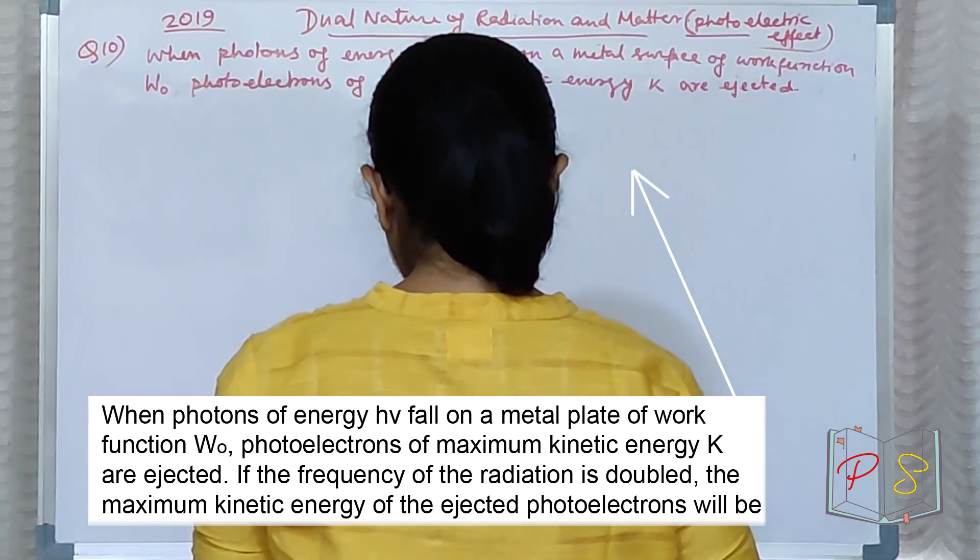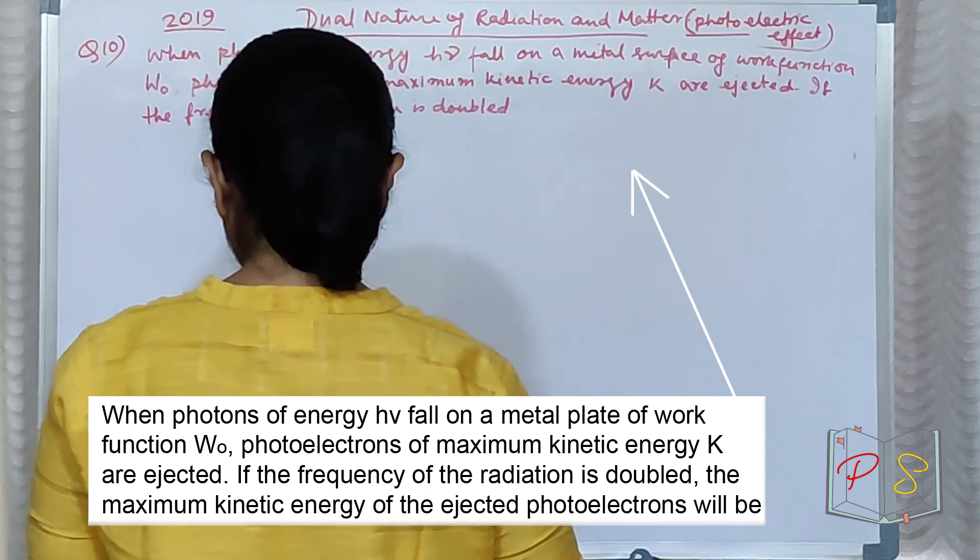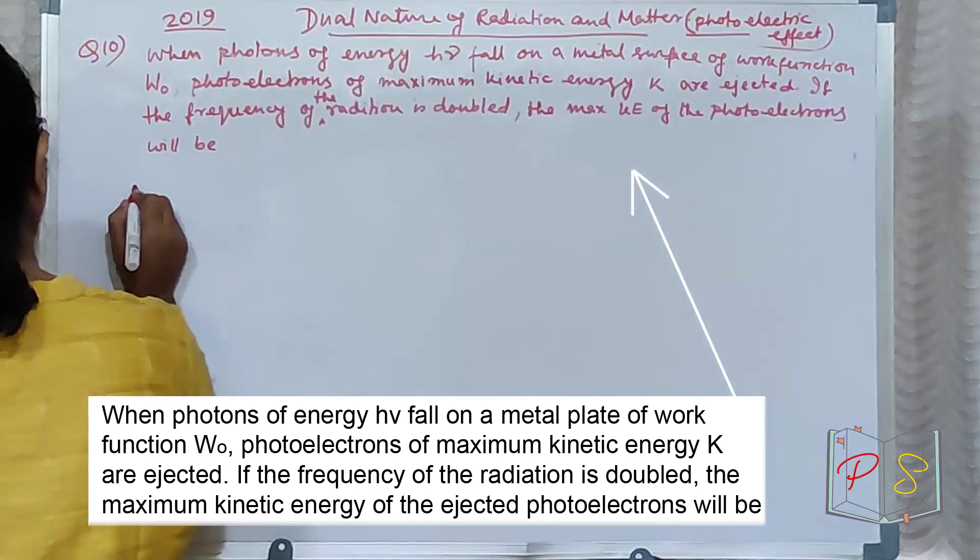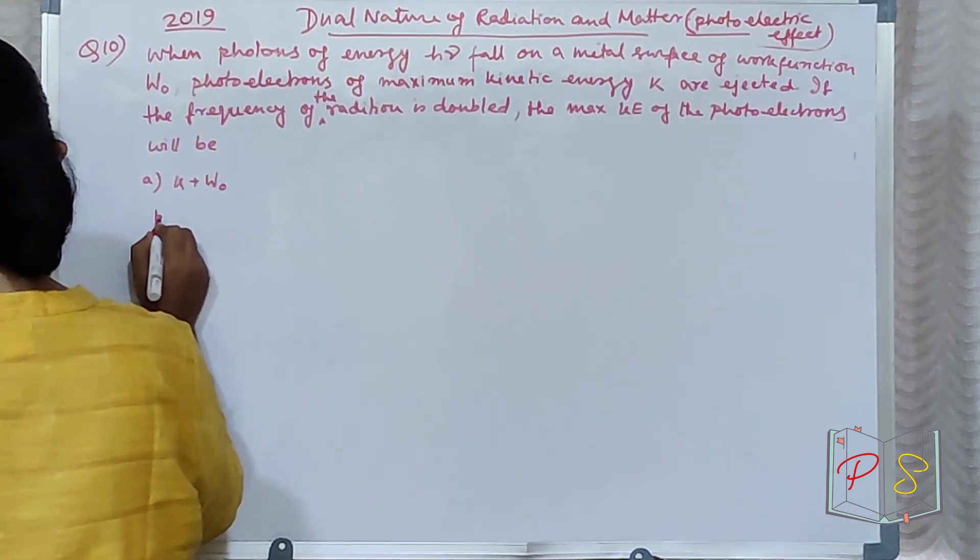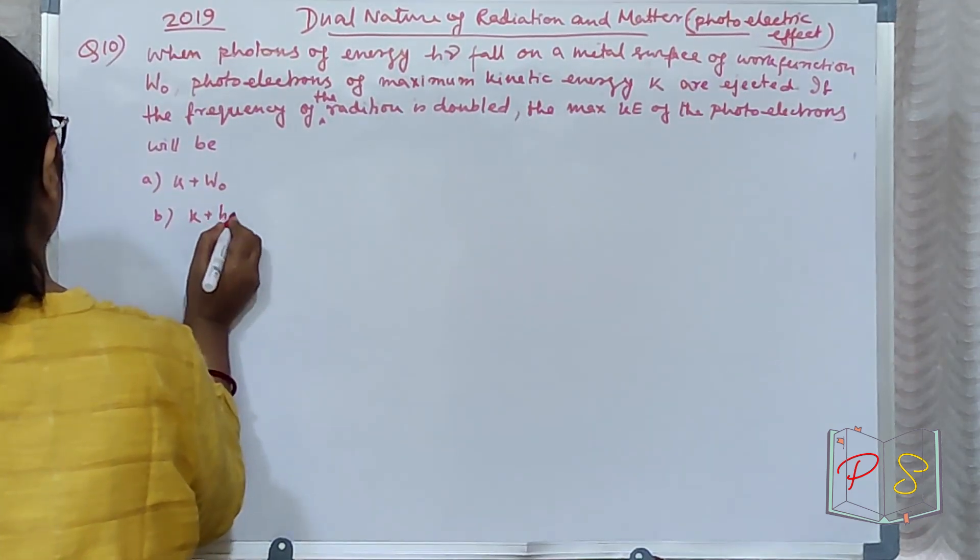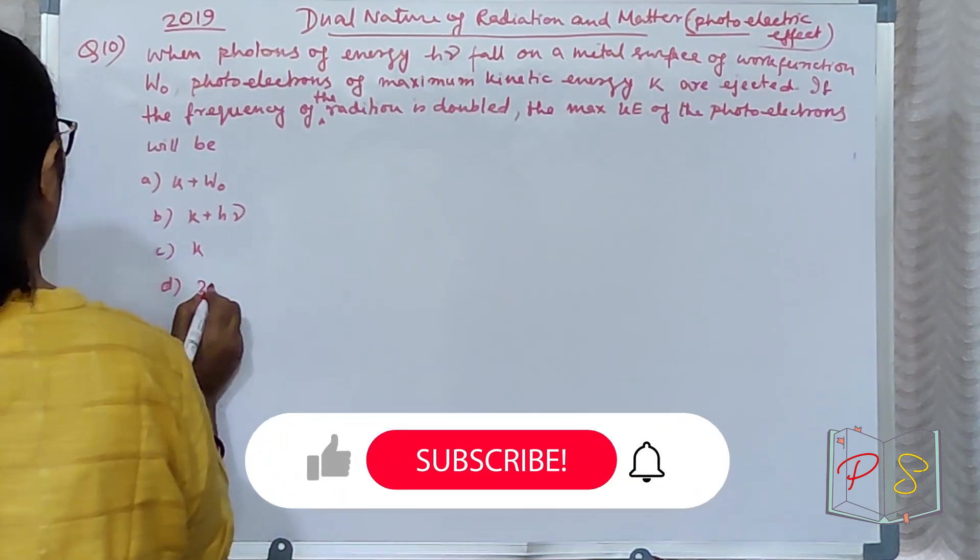If the frequency of the radiation is doubled, the maximum kinetic energy of the ejected photoelectrons will be option: a) K + W₀, b) K + hν, c) K, d) 2K.